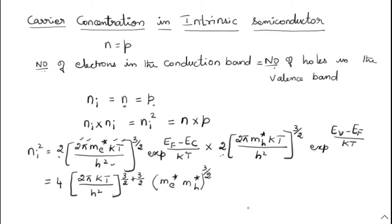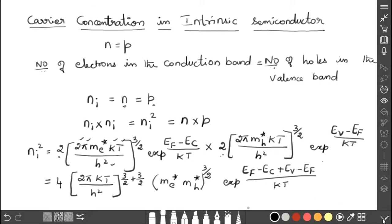Then exponential of A term into exponential of B is exponential of A plus B. Here A is (E_F minus E_C) and B is (E_V minus E_F), whole divided by KT. So using the rule: exponential(A) × exponential(B) = exponential(A + B), I have added both: A is E_F minus E_C divided by KT and B is E_V minus E_F divided by KT.